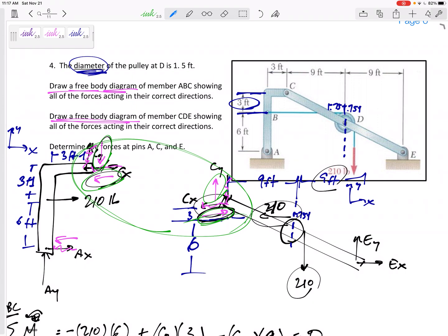Pins, what do you need at a pin? An AX and an AY. What do you need at a rocker? Just one force perpendicular to the surface. Rollers, normal forces.